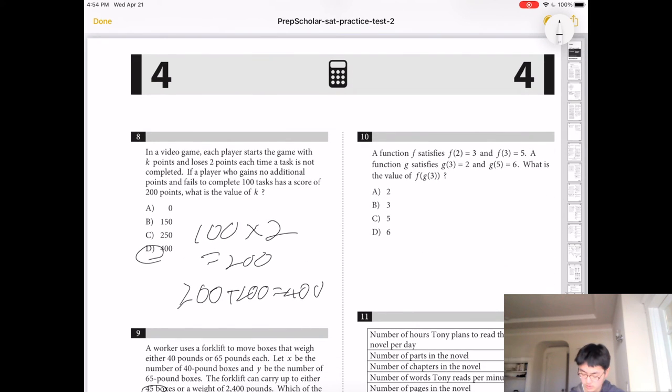Number 10, f of 2 is 3, f of 3 is 5, f of 3 is 2, and f of 5 is 6. So g of 3 is 2, so this is asking for f of 2, which is 3. So the answer is B for number 10.